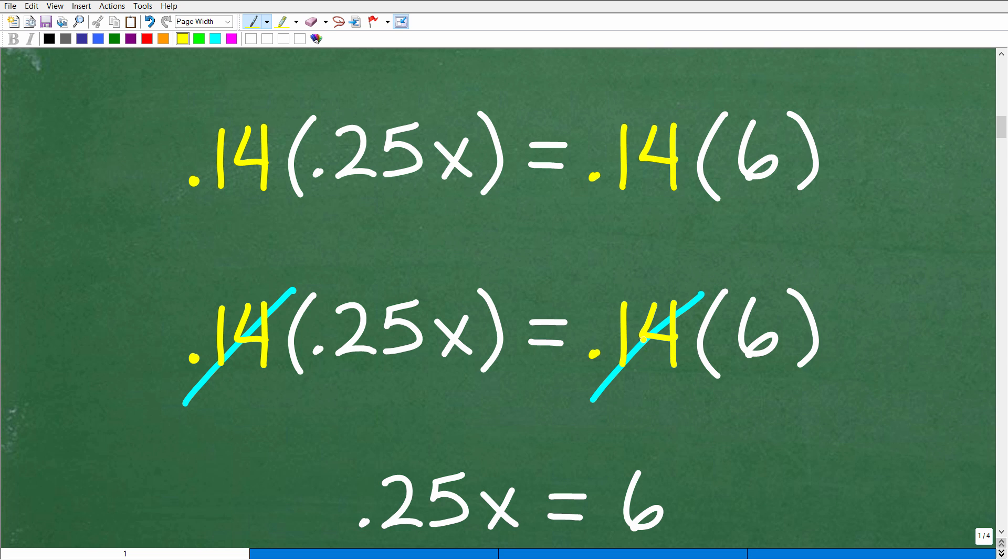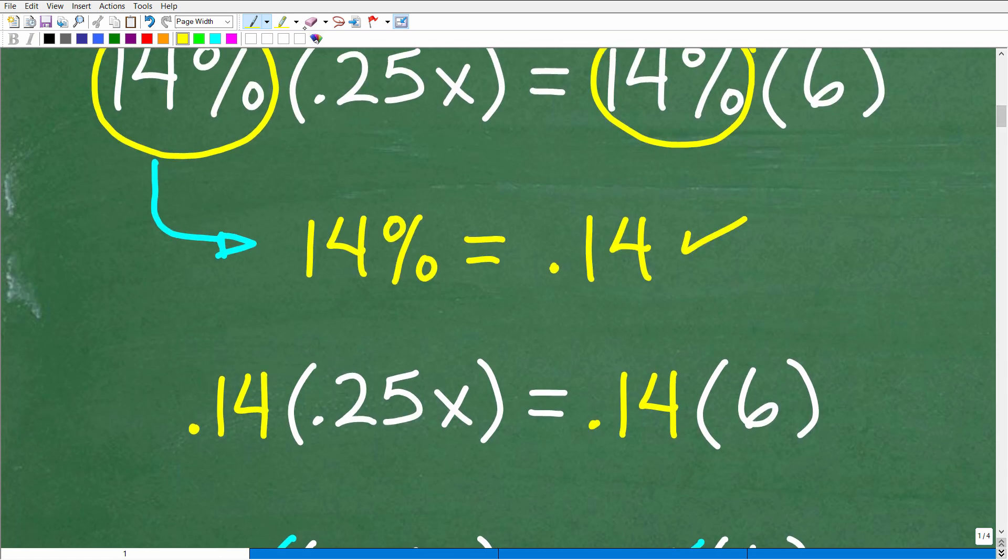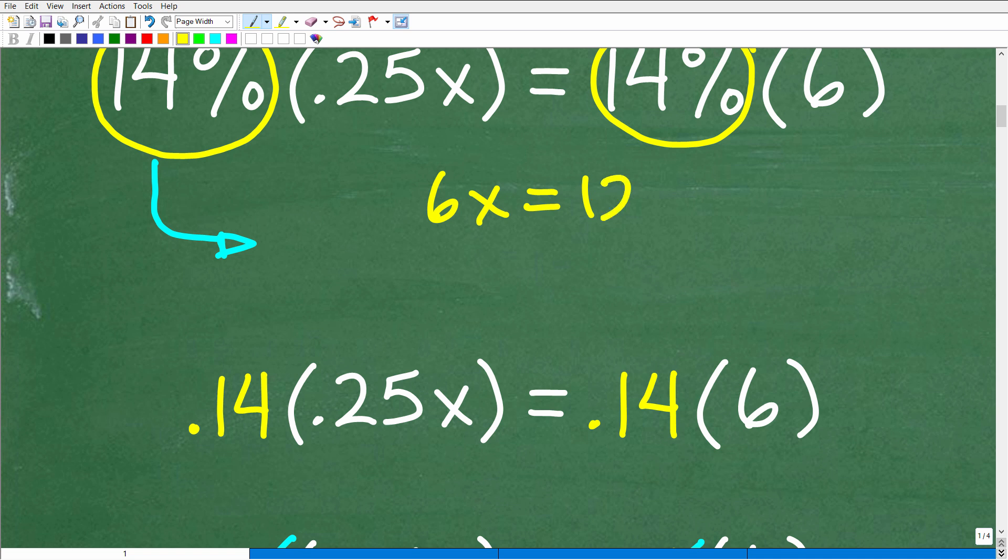Now you can see my next move is I am indeed going to cross cancel these 0.14s. But let's look at an easier example of why I can do that. Well, let's suppose you had 6x is equal to 12, all right? So 6x is equal to 12. But if I had 2 times 3x is equal to 2 times 6. So basically, I'm rewriting this equation. It's the same equation. 6x is the same thing as 2 times 3x. And 12 is the same thing as 2 times 6.